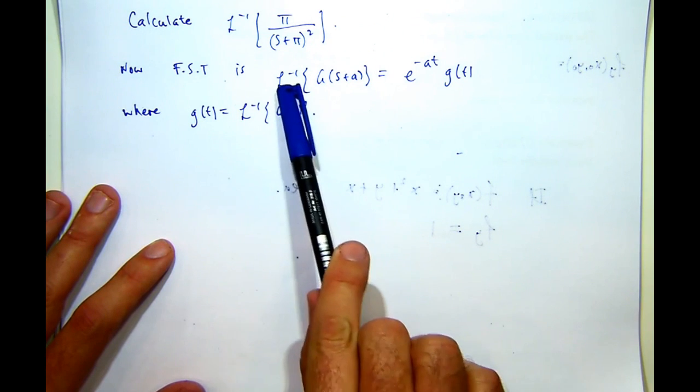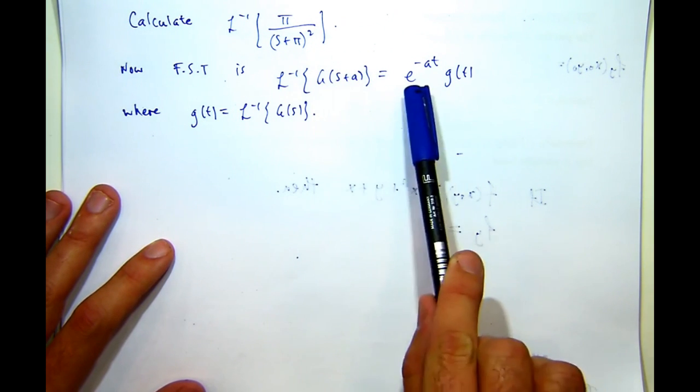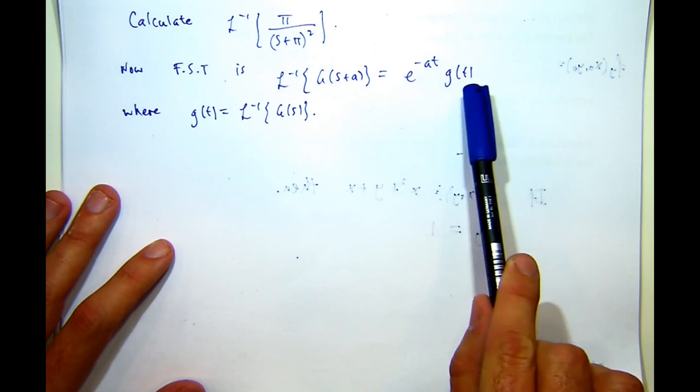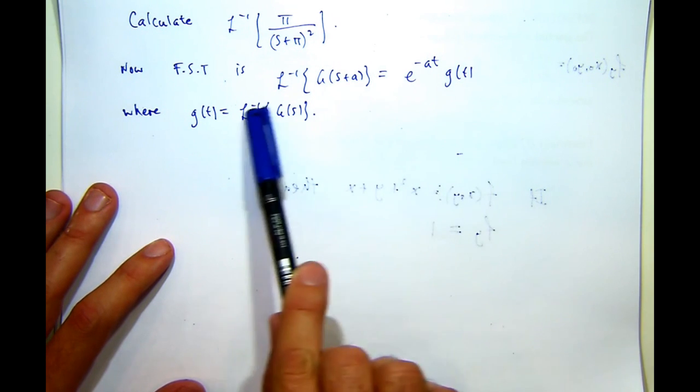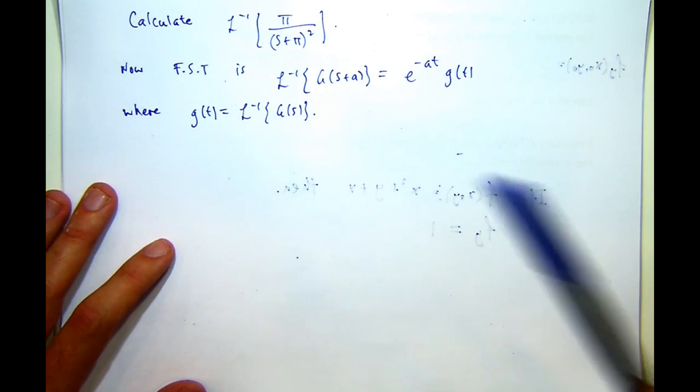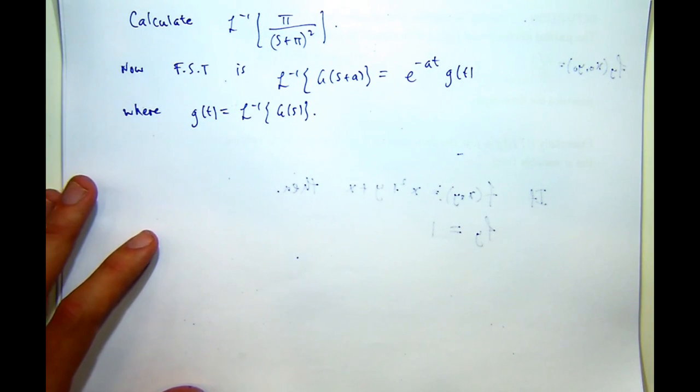So the first shifting theorem says that the inverse transform of this shifted function is the following product involving exponential in this g of t, where little g of t is the inverse transform of big G of s.